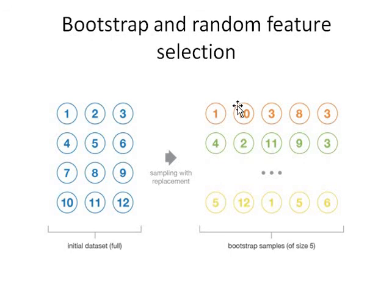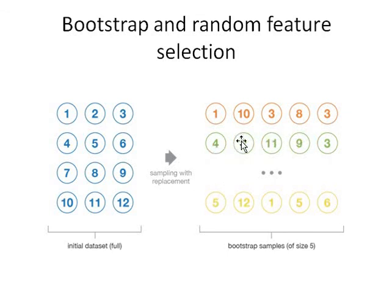In each Bootstrap Sample, there is also Feature Selection, that is variable selection. For example, if our 12 rows contain 5 variables, then the 1st, 2nd, and 5th variables can be selected in the first Bootstrap Sample. The 1st, 2nd, and 3rd variables can be selected in the second Bootstrap Sample. Feature selection, that is variable selection, is taken randomly in Random Forest — there is Bootstrap Sampling as well as Feature Selection in the bootstrapping.